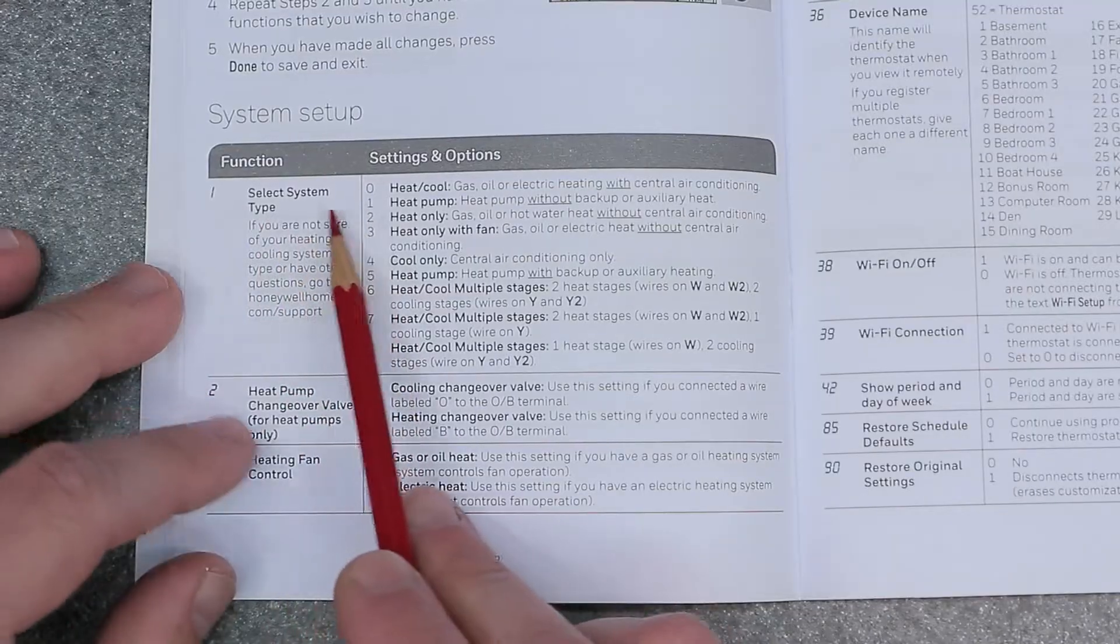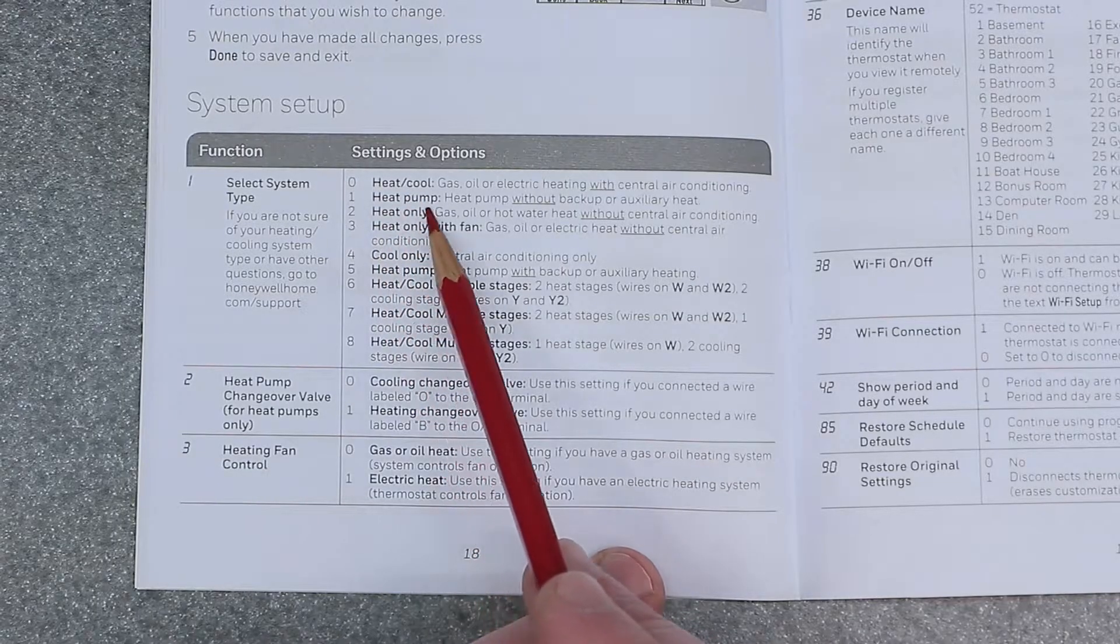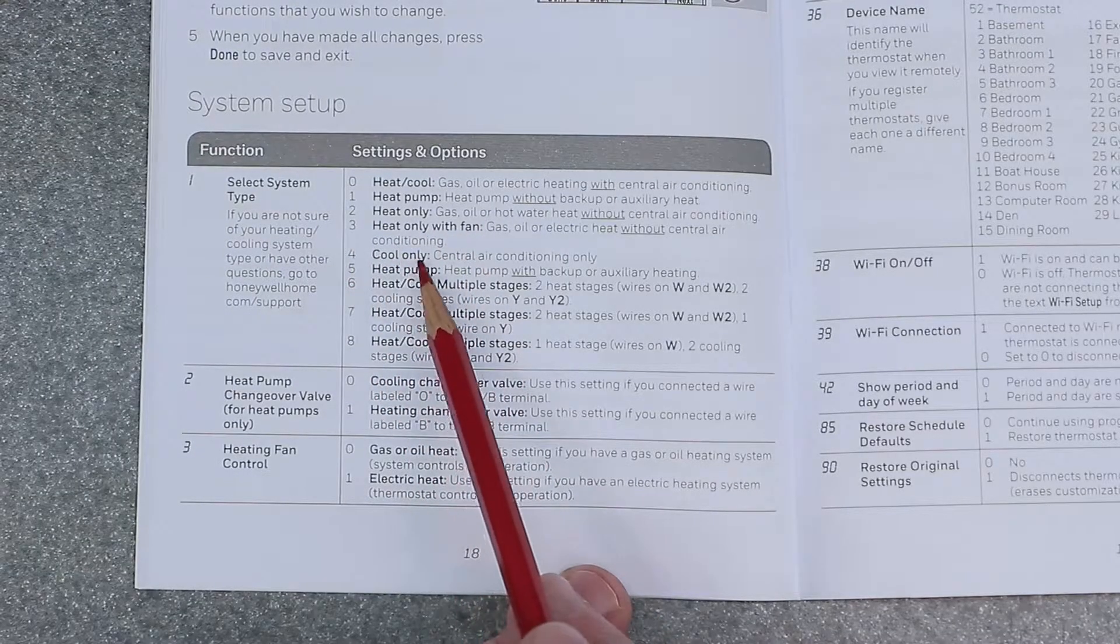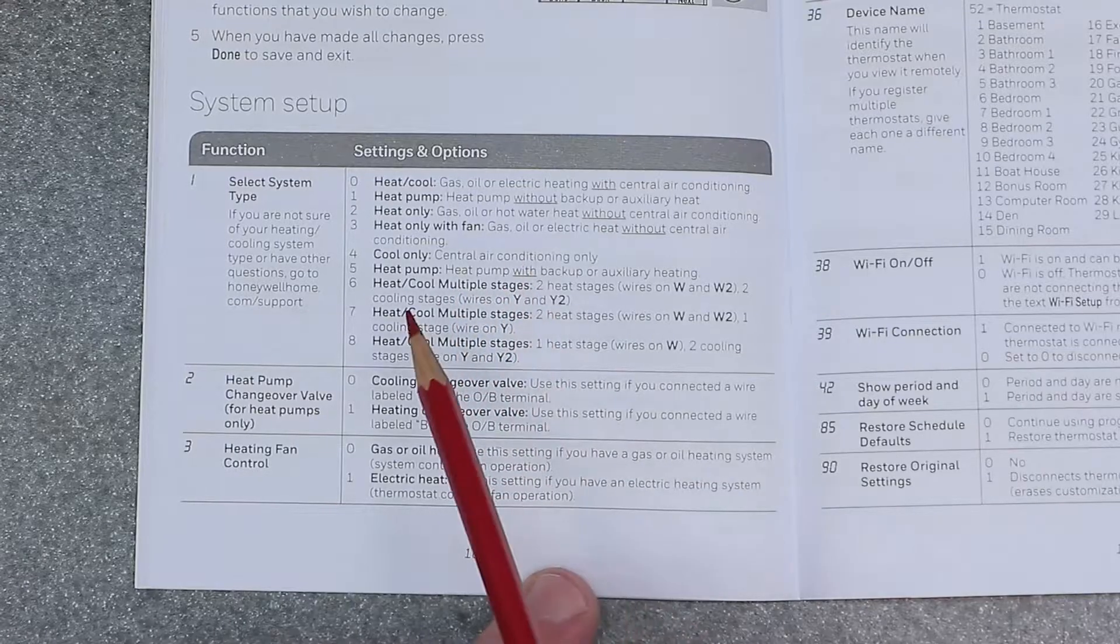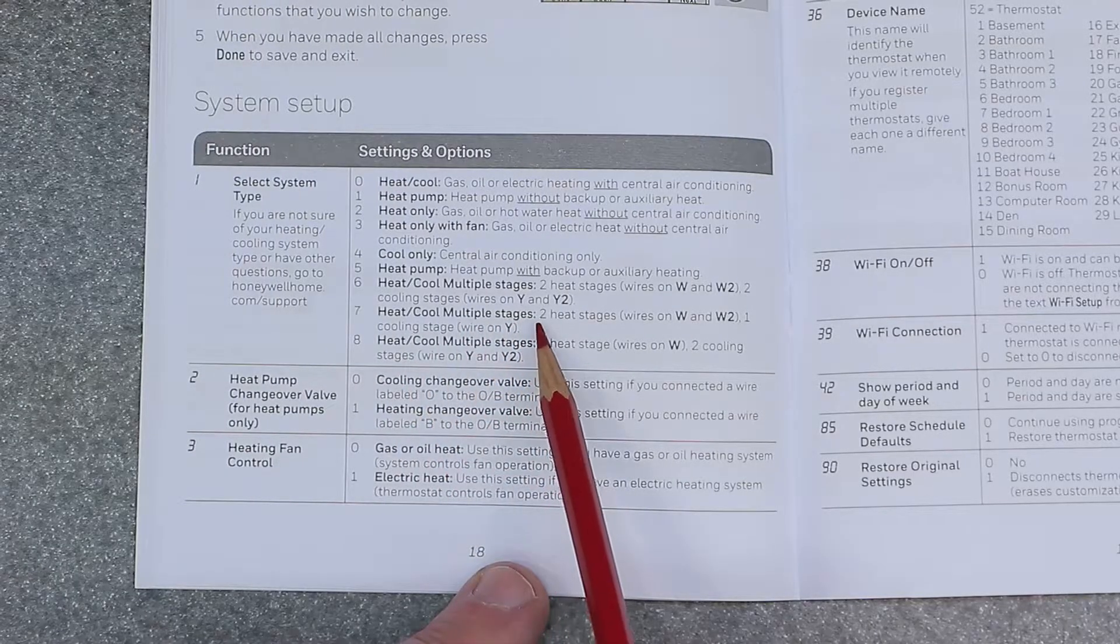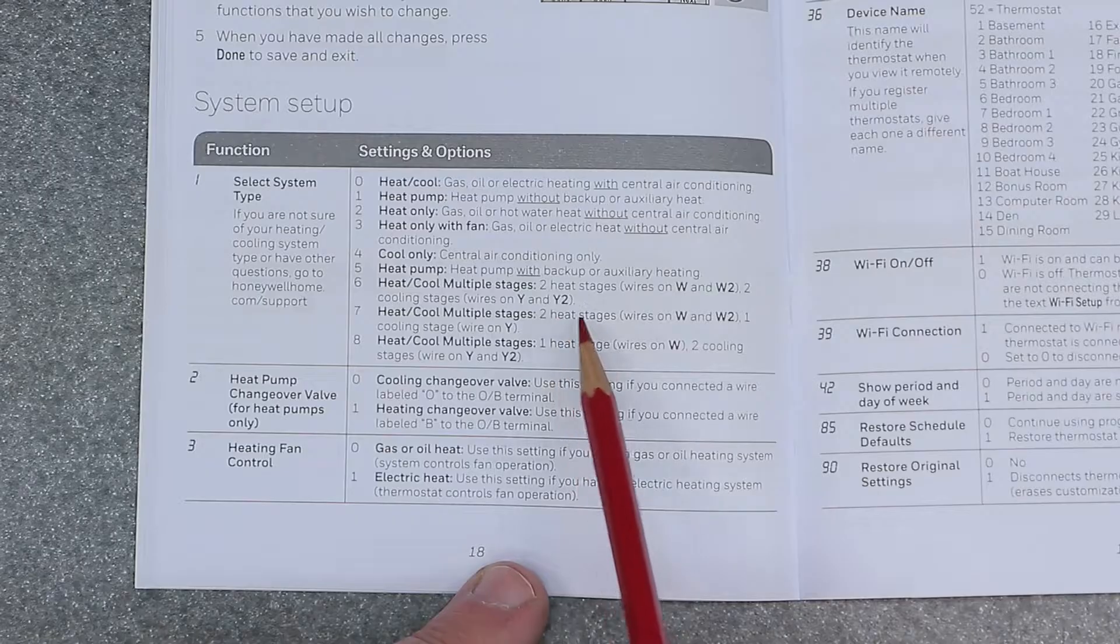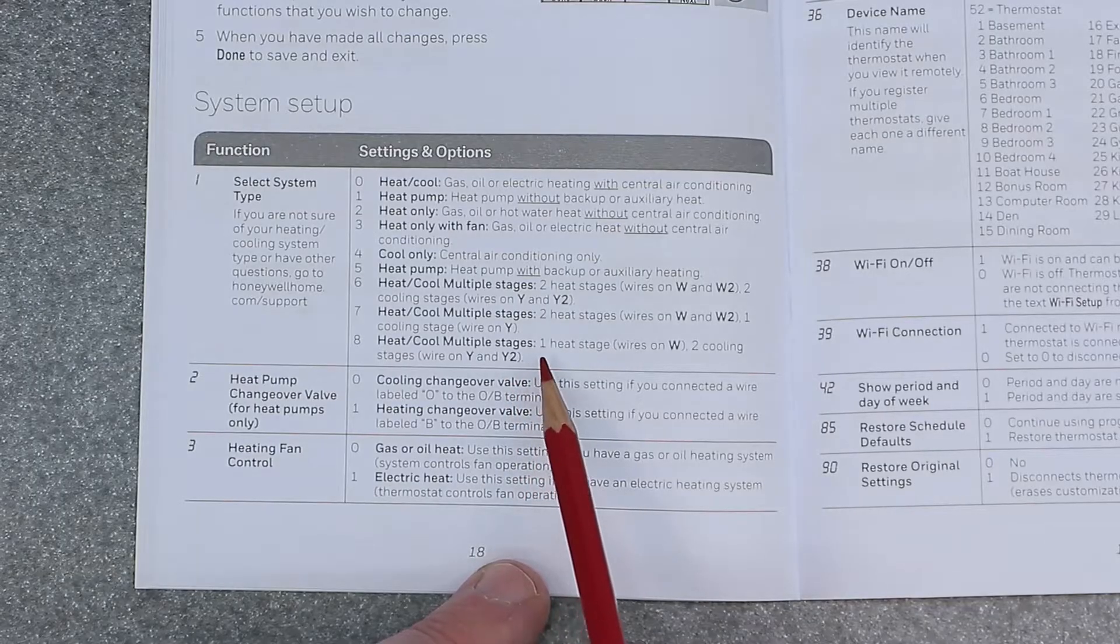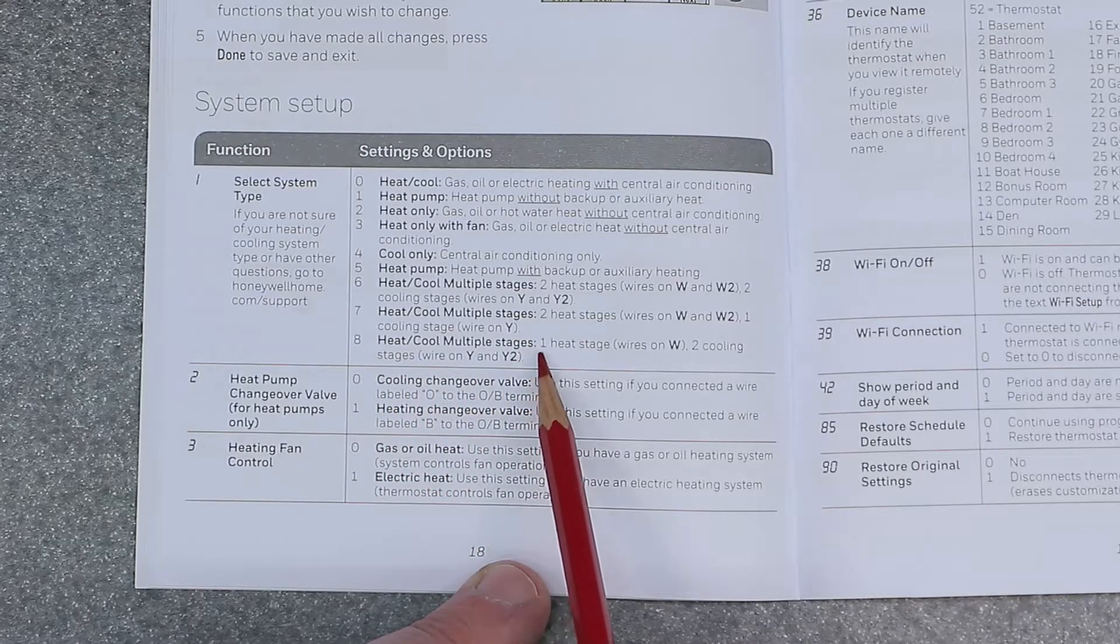So number one is going to be select system type. We have zero equals heater cool. One is heat pump. Two is heat only. Three is heat only with fan. Four is cool only. Five is heat pump. Six is heat cool multiple stages. Seven is heat cool multiple stages. And the difference between here is the way it's wired. So it says two heat stages and two heat stages with different wiring configuration. So I would definitely take a look at this manual if you are setting this up for the first time. But number eight is heat cool multiple stages with one heating stage.